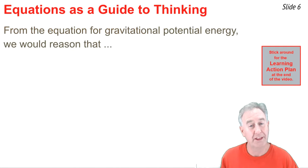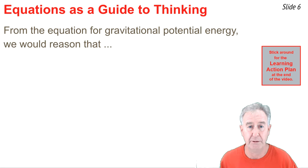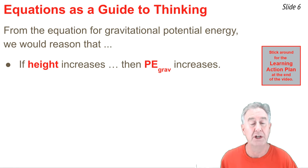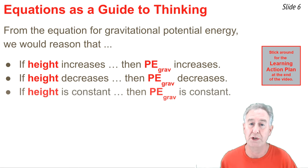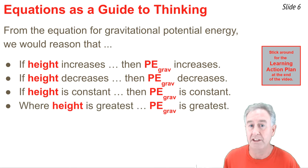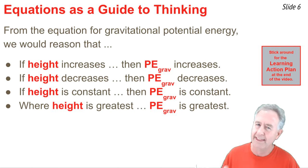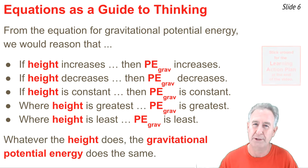One way to think about equations in physics is as a guide to how a change in one variable affects another. From the equation for gravitational potential energy, as height increases, so does potential energy; as height decreases, potential energy decreases as well. If height is constant during a motion, potential energy is constant. Wherever height is greatest over the course of an object's motion, gravitational potential energy is greatest. Wherever height is lowest, potential energy is least. As the height goes, so goes the potential energy.